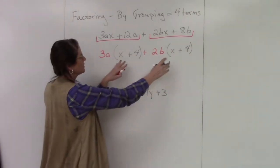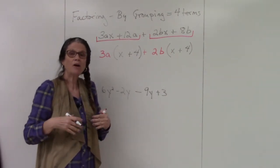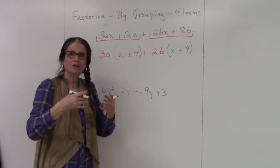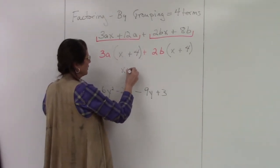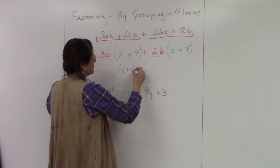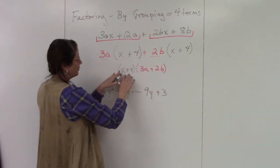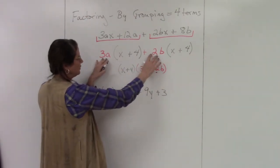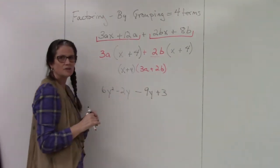Now if you notice, what's in parentheses is the same thing. It's exactly the same thing. So now I'm just going to factor again—greatest common factor. What's in common? I have x plus 4 in common. What's left is 3a plus 2b. So you factor what's in common, and then the two things that are left go in the other set of parentheses.